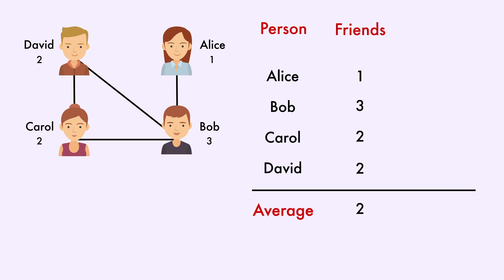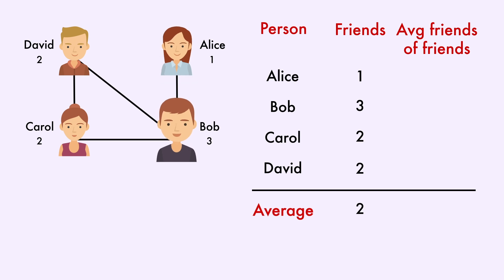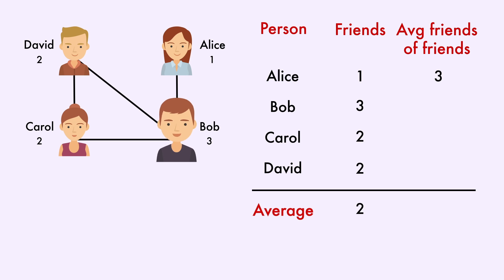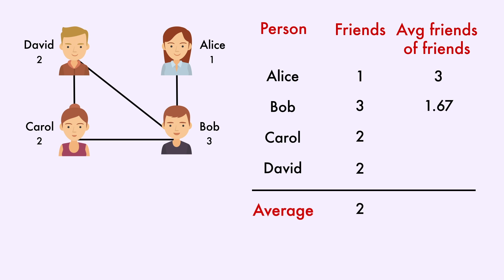Now we need to determine how popular people's friends are on average. To avoid using the word friend a lot, I'm going to use the word score to define how popular they are, as in Bob would have a score of three. So if we look at Alice, she only has one friend — Bob — who has a score of three. Thus we can say Alice's friends, on average, have a score of three. For Bob, his friends have a score of one, two, and two, giving us an average of 1.67.